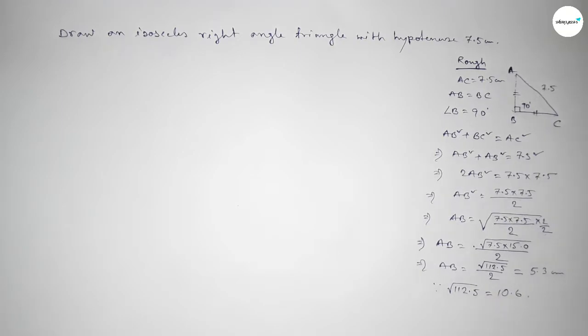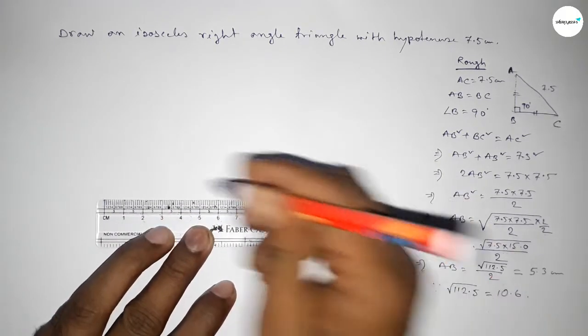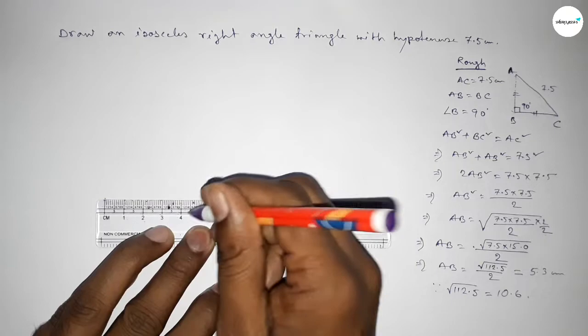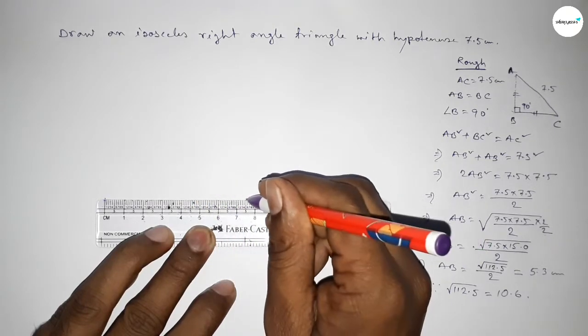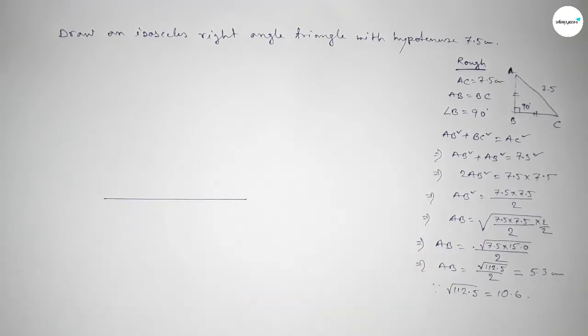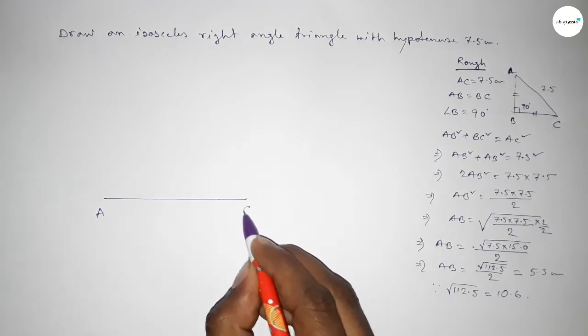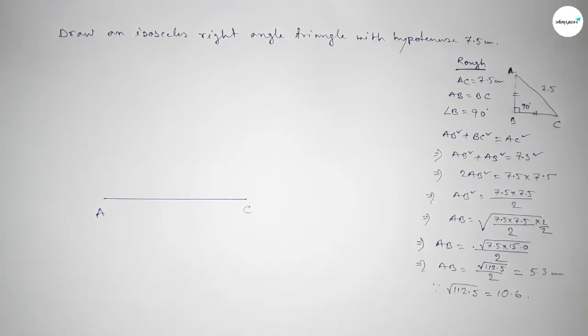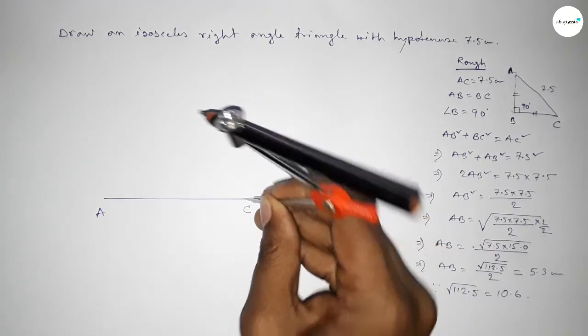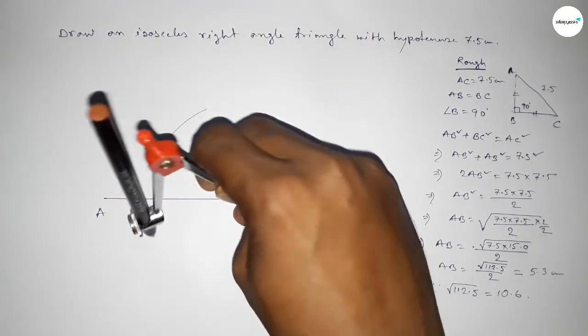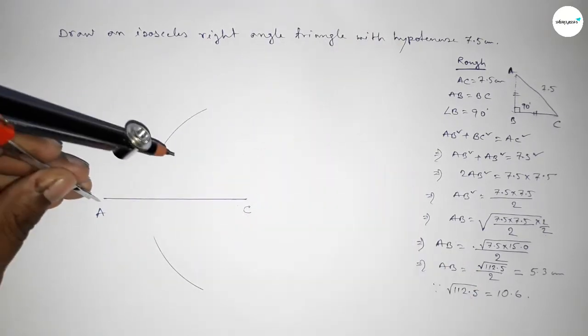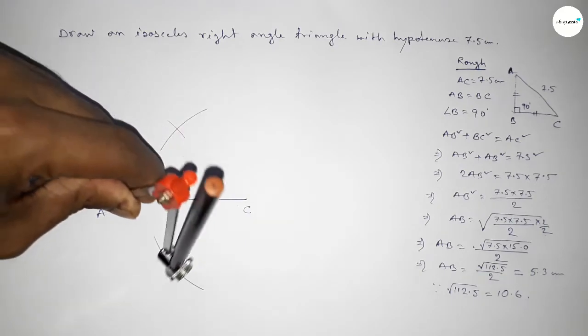So now drawing the triangle here. First drawing here a line of length 7.5 centimeters, taking here point A and here point C. Now bisecting this line, so putting the compass here and taking greater than half of AC and drawing an arc by this way. With the same length, putting the compass here to cut here.